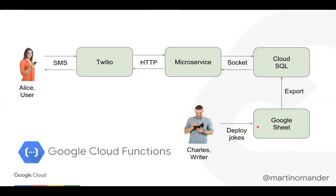We now have a microservice that returns random jokes and a very scalable database. Beth can take snapshots, do backups, or replicate if she wants. There is an admin interface in the form of Google Sheets — Beth did not have to build a special administrative interface for Charles. This is something many developers struggle with: they build big admin interfaces for internal users when they could just let those users use Google Sheets and use the Google APIs to read from that spreadsheet, giving you an admin interface for free. All of this code runs as Google Cloud Functions, deployable with a single command.